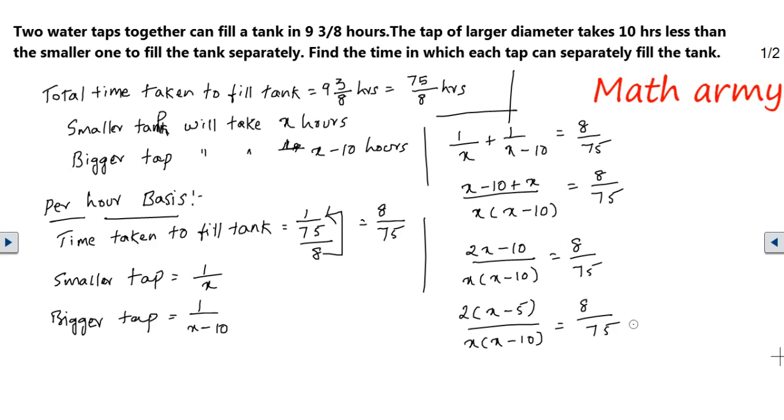Do a cross multiplication. You will be getting 75 multiplied with X minus 5, and on the right hand side, 4. This denominator, X square minus 10X. On multiplying these two, I will be getting X square minus 10X. 75 into X is 75X minus 75 into 5 is 375 equal to 4X square minus 40X.